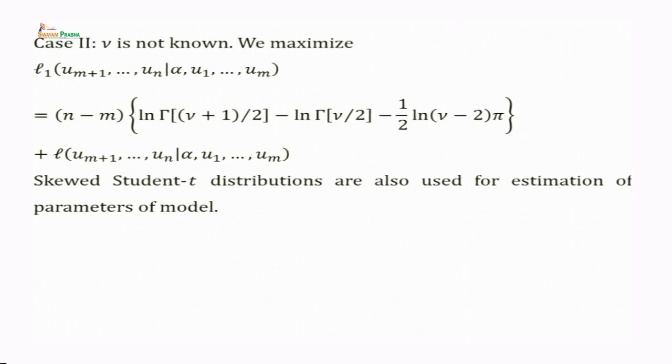Sometimes one also uses skewed Student distributions for parameter estimation. If we assume the errors are not only fatter-tailed than the normal distribution but also skewed, whether positively or negatively, then one can use a skewed Student distribution, define the likelihood function, maximize it, and obtain the maximum likelihood estimators.